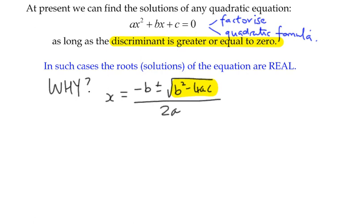If that number under the square root sign is positive, it means we've got two values, a value we're going to add to negative b and a value that we're going to subtract, which gives us our two solutions.